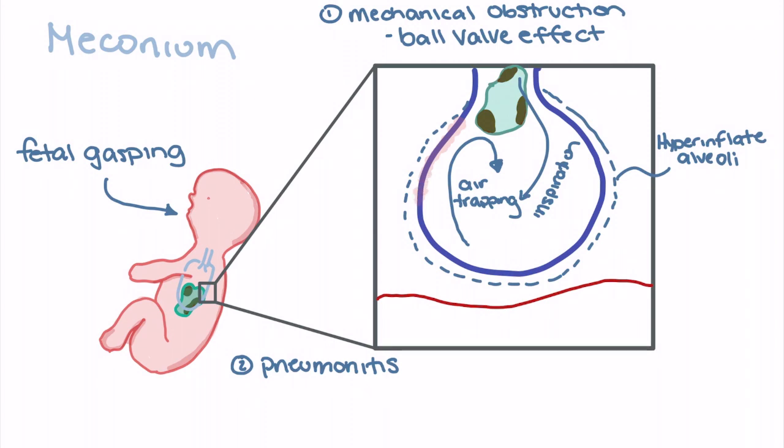As meconium enters the airway, it leads to an inflammatory response and widespread recruitment of inflammatory mediators. As these mediators reach the alveoli, they cause an inflammatory response leading to stiffening and fibrosis of the alveoli themselves.